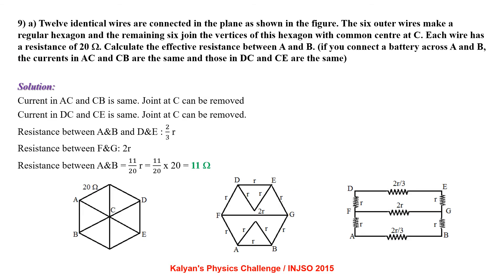12 identical wires are connected in a plane forming a regular hexagon with 6 outer wires, and the remaining 6 join the vertices to a common center C. Each wire has resistance 20 ohm. When a battery is connected across A and B, currents in AC and CB are the same, so joint C can be removed. Similarly for DC and CE. The resistance between A and B and between D and E is 2 by 3 R, and between F and G is 2R. From the redrawn circuit, effective resistance between A and B is 11 by 20 R, which is 11 ohm.